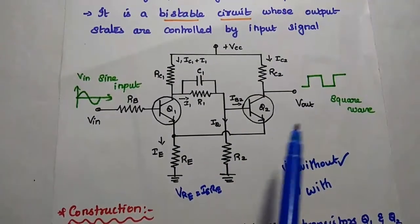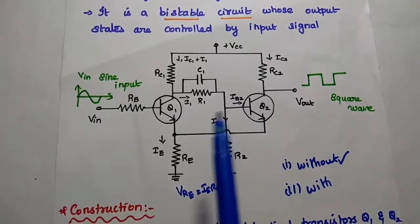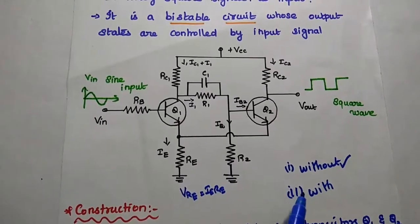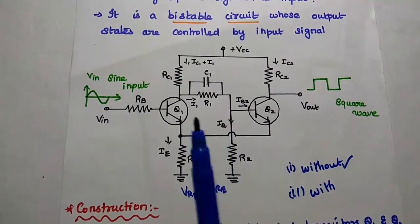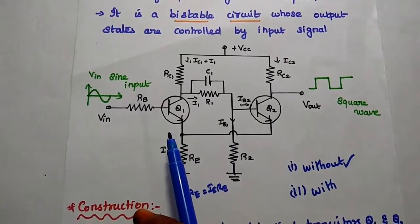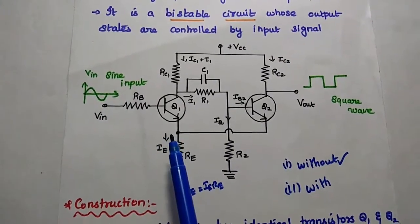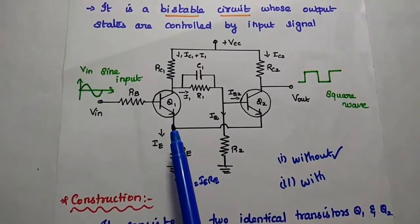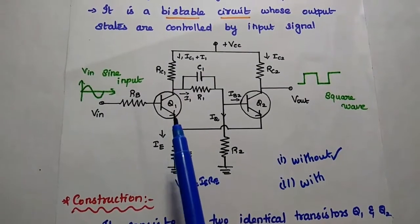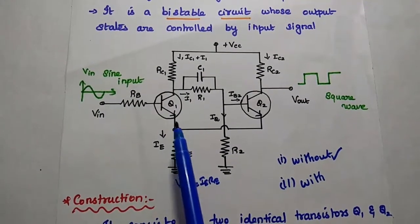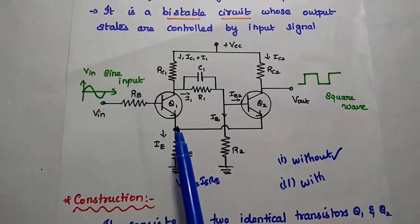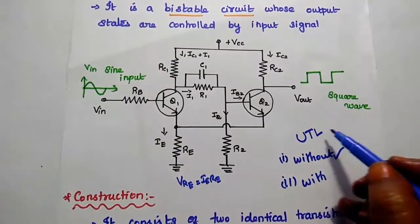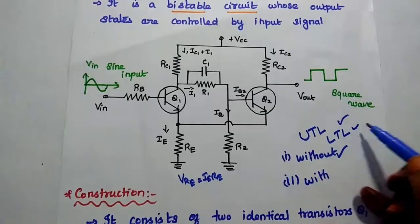Without any input, Q2 is driven into the saturation region and Q1 is in the cutoff region. With an input signal applied to Q1, Q1 remains in the off state — it is not immediately driven into the active region. It remains in the cutoff region until the voltage of the input signal crosses the upper trigger level for Q1. The upper trigger level and lower trigger level are very important concepts in the Schmitt Trigger.